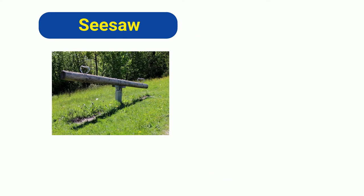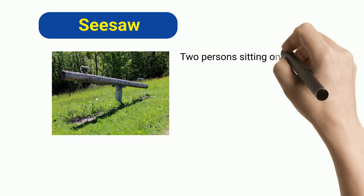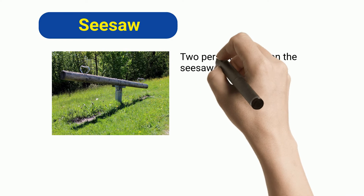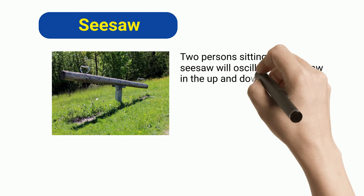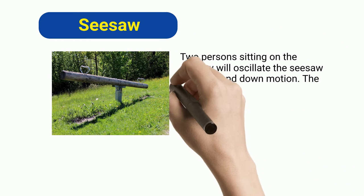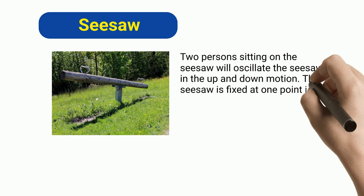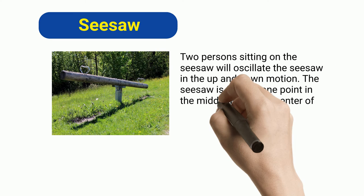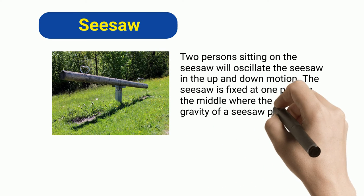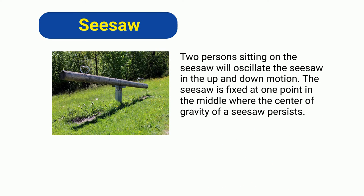Seesaw. Two persons sitting on the seesaw will oscillate it in an up and down motion. The seesaw is fixed at one point in the middle where the center of gravity of the seesaw persists.